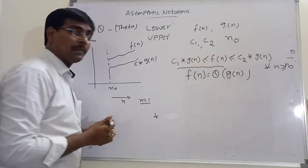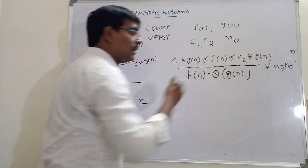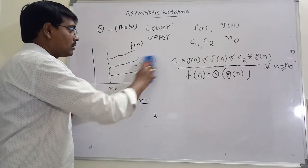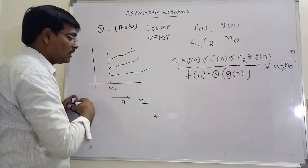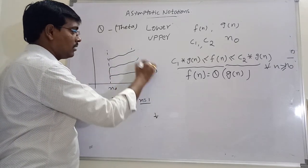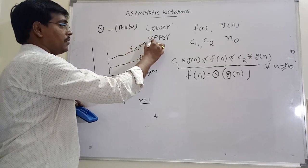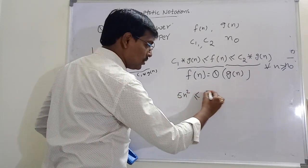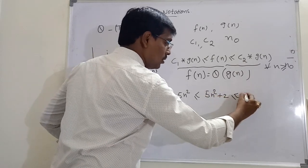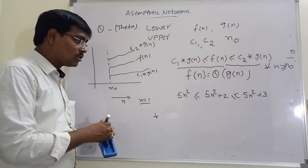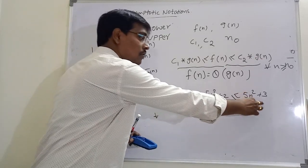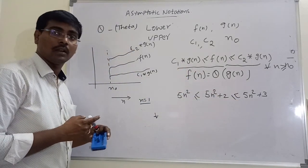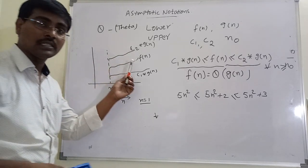The part c1 × g(n) represents lower bound, and c2 × g(n) represents upper bound, so it contains both. For example, 5n² ≤ 5n² + 2 ≤ 5n² + 3. For n = 1, the values are 5, 7, and 8, which satisfies this condition. So f(n) = Theta(5n²). These are the three asymptotic notations, useful for representing time complexity and space complexity.